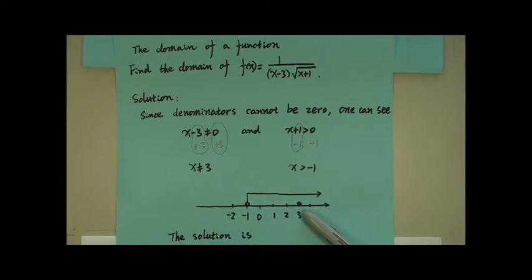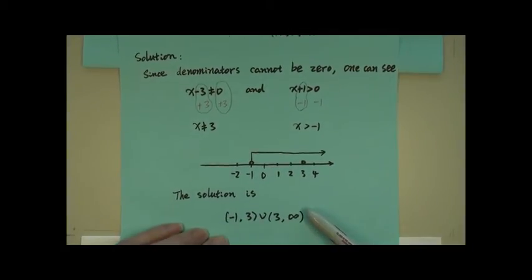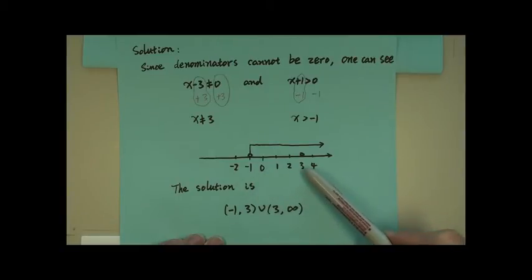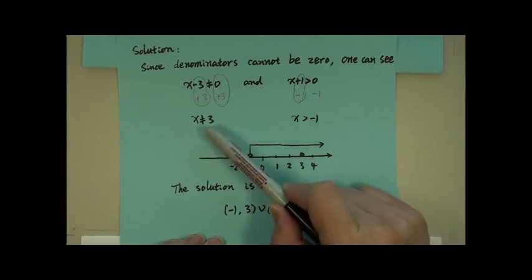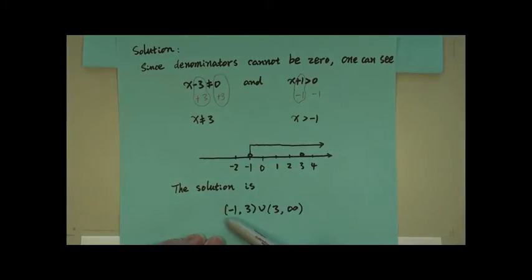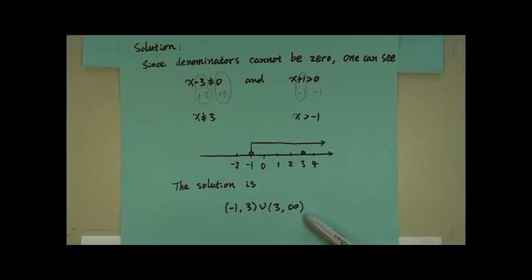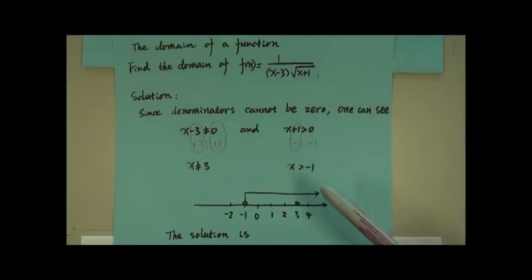So how to express the solution? You want to write in this way: from negative 1 to positive 3, 3 is not included, so you use round bracket. And then from positive 3 to the right-hand side. Union means both two ranges you want. From 3 to positive infinity. Again, here infinity is not included, so you always use the round bracket for infinity. That will be the domain for this function.